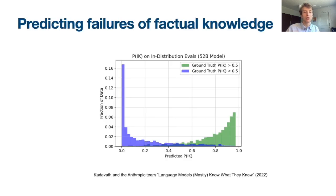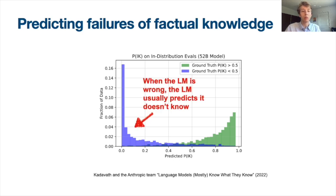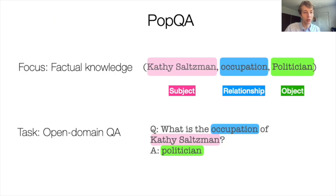Despite hallucinations being widely recognized as a key issue in the literature, we currently lack an actionable understanding of when language models are likely to hallucinate. Kadavath et al. proposes that language models usually know what they know, and that you can often fine-tune a probe on the language model to predict whether it will be able to answer a question correctly. But this requires fine-tuning a probe on model activations, which aren't even always available. So we take a different approach.